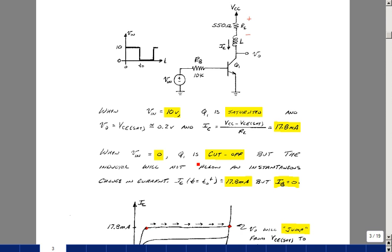When Vin equals 0, we're going to cut off the transistor. But if we had been in saturation for more than 5 time constants, the collector current would be around 17.8 milliamps. All of a sudden now we turn off the base current and we have 0 base current.